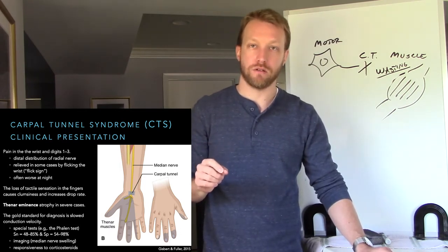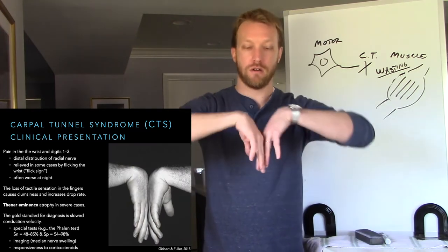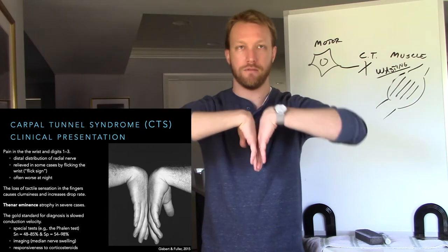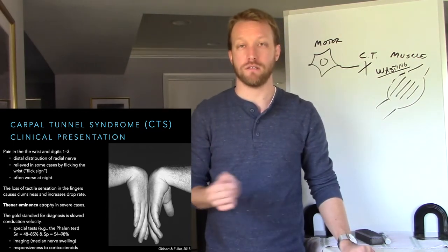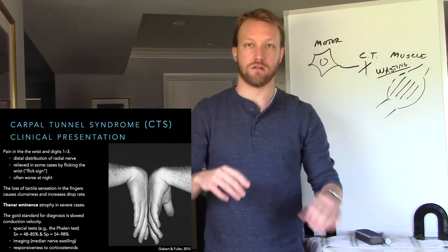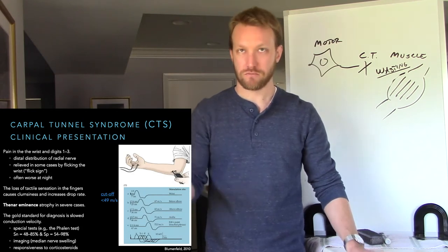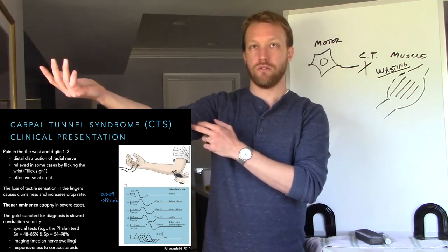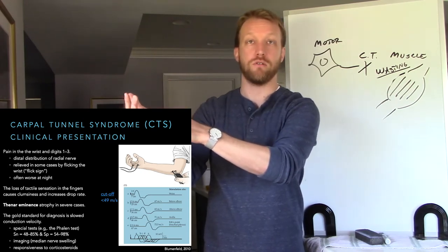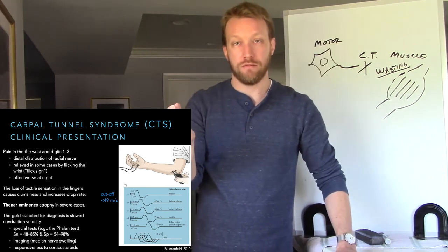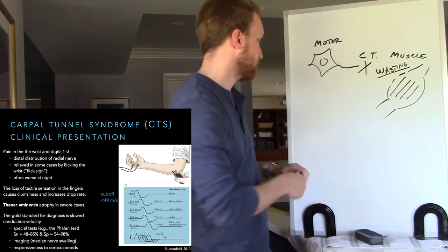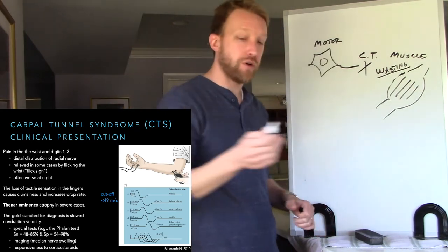For diagnosing carpal tunnel syndrome there are a few provocative tests, such as the Phalen's test, where you hold your hand in a flexed position for a minute or so and see if there's pain. This works well in some cases but is unreliable in others. Imaging can be used to look for swelling of the nerve or a decrease in the size of the carpal tunnel. The gold standard, however, is nerve conduction velocity studies: we stimulate the median nerve at different points and measure the activity in its distribution, then calculate conduction velocity from the known distance and the time for the action potential to travel.